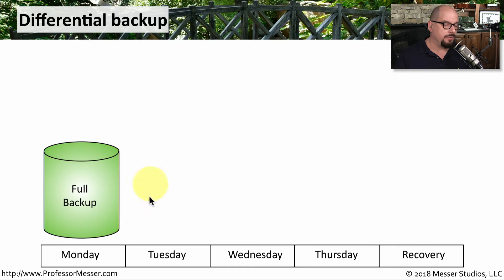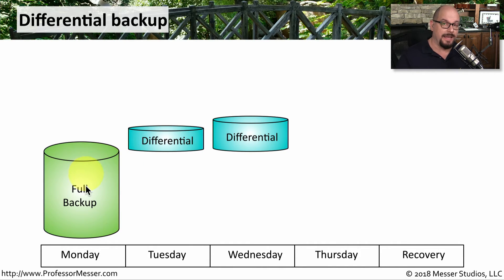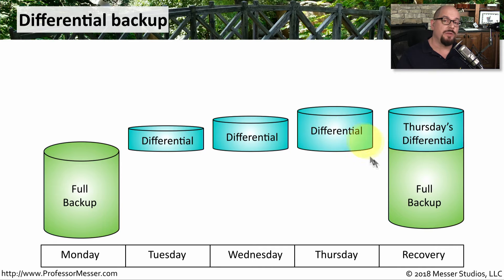A differential backup works a little bit differently. We'll still perform the full backup exactly as we did on Monday. On Tuesday, we will take a differential backup of everything that's changed since the last full backup. On Wednesday, we'll take another backup of everything that's changed since the last full backup. And on Thursday, we'll take another backup of everything that's changed since the last full backup. With each of these differential backups, we're backing up everything that's happened since the last full backup, so there is a little bit of redundancy. The benefit is when you have to recover the system — you simply need the full backup from Monday and the last differential backup that contains all of the differences since the last full backup.